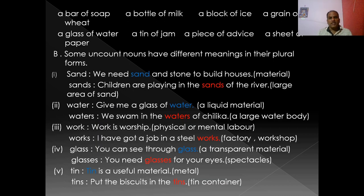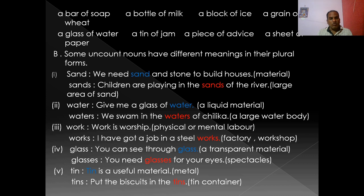We can also make uncountable nouns countable with the help of phrases: a bar of soap, a bottle of milk, a block of ice, a grain of wheat, a glass of water, a tin of jam, a piece of ice, a sheet of paper — like this. But some uncountable nouns have different meanings in their plural forms. When they are in singular form, they have the real meaning; when they are in plural forms, they have different meanings.